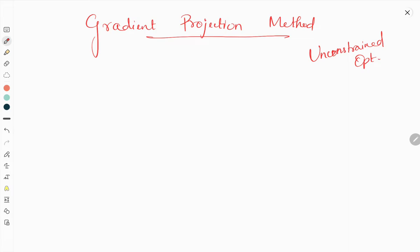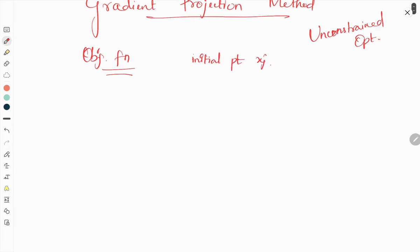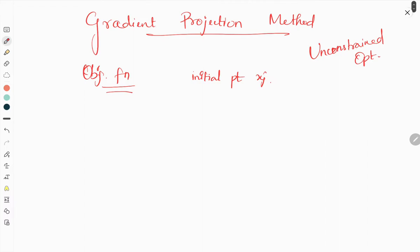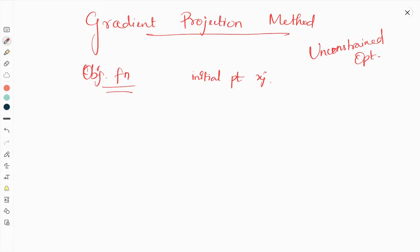In this method, we don't have any constraints. We will be having only the objective function and some initial point xj. This method is useful when we are given a function and we seek to find the maximum or minimum value of that function.